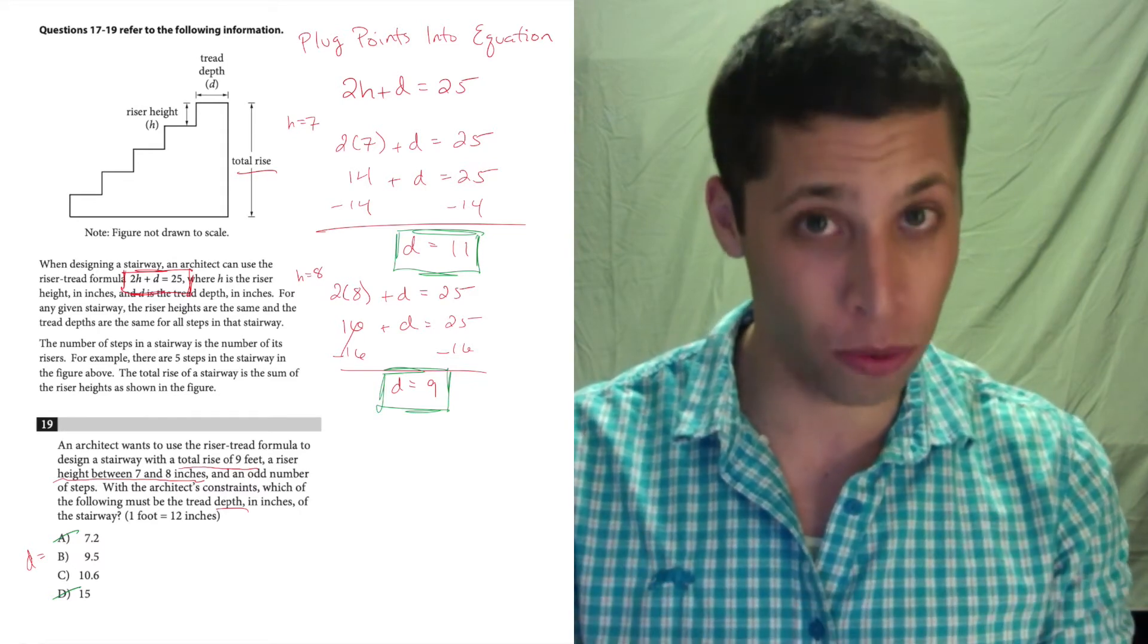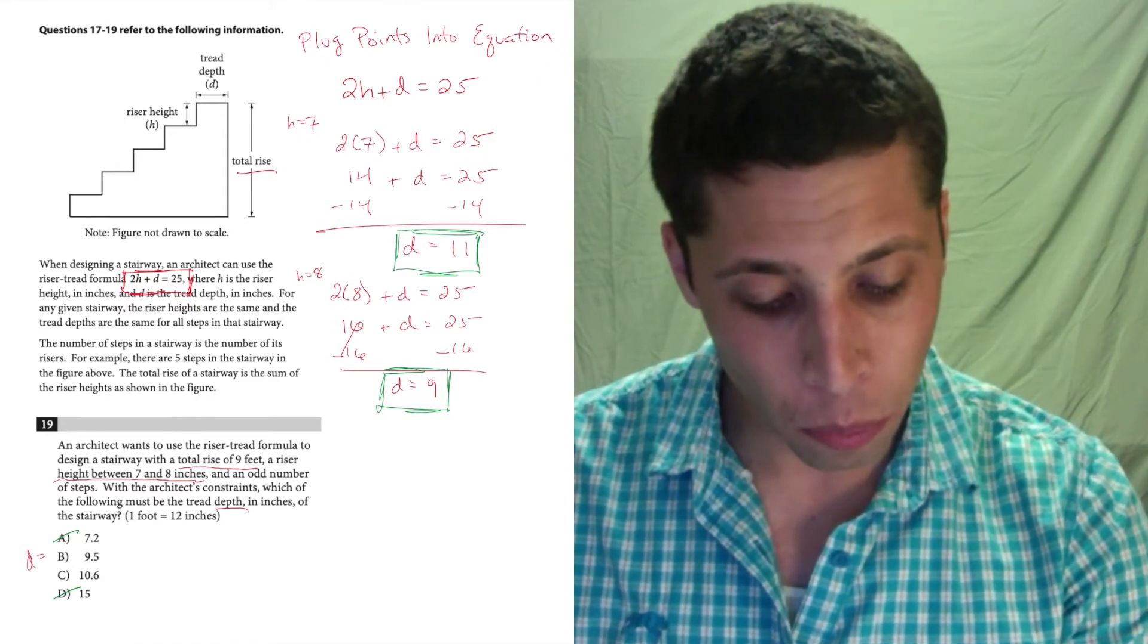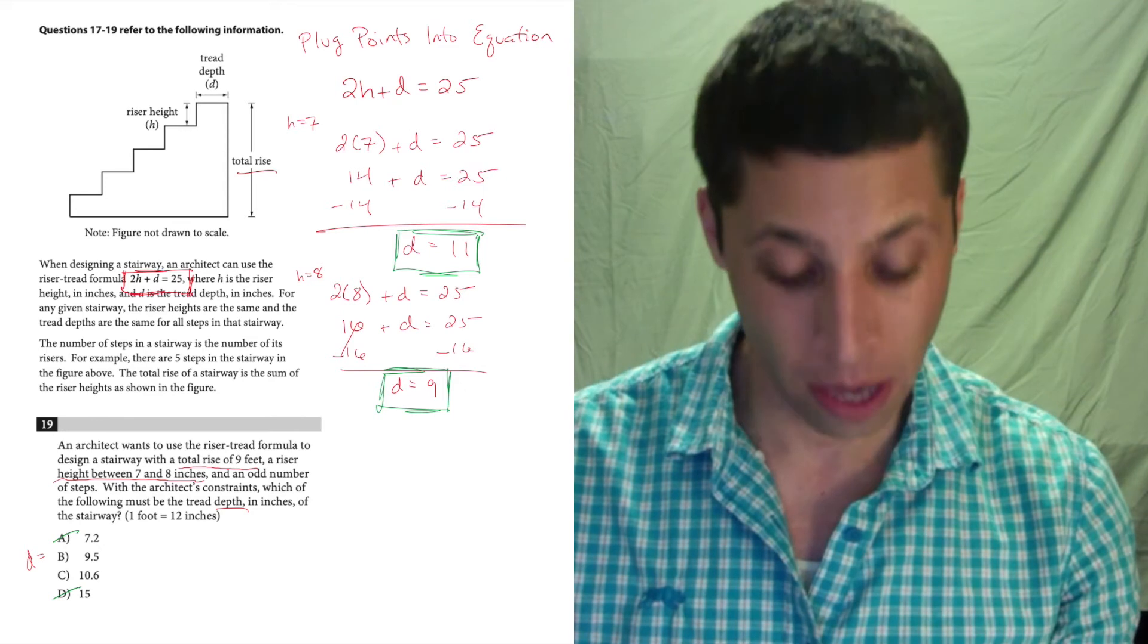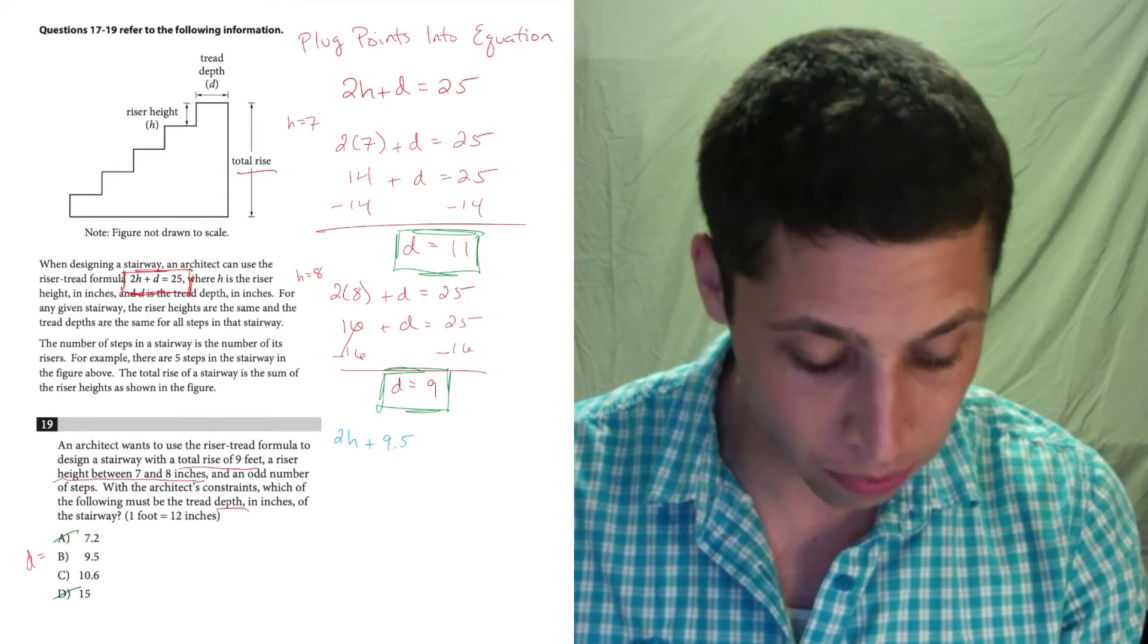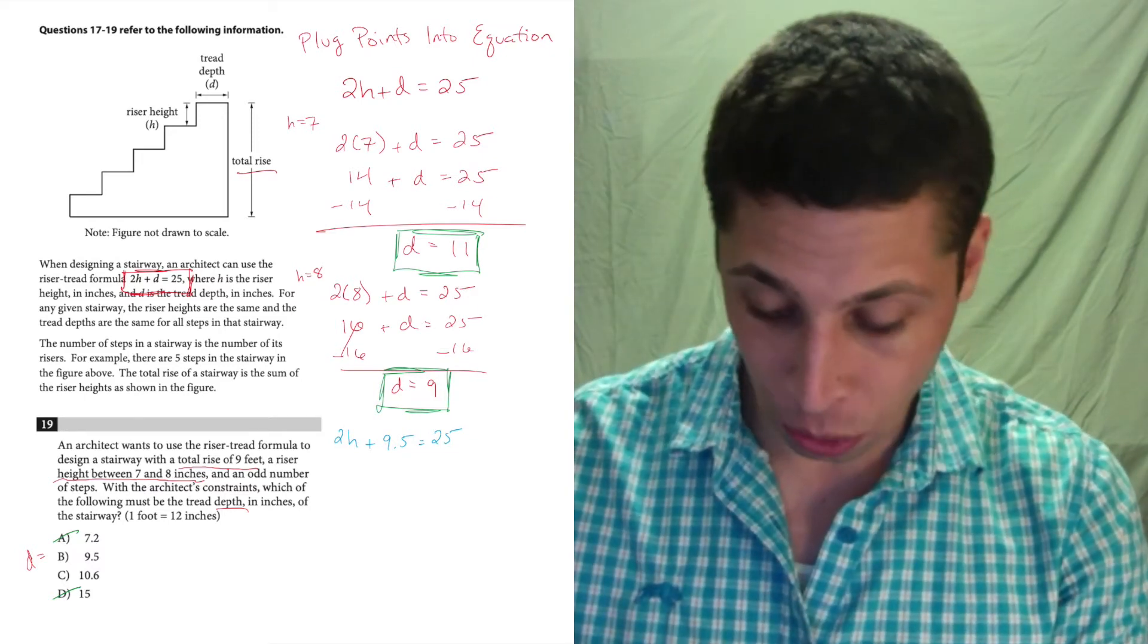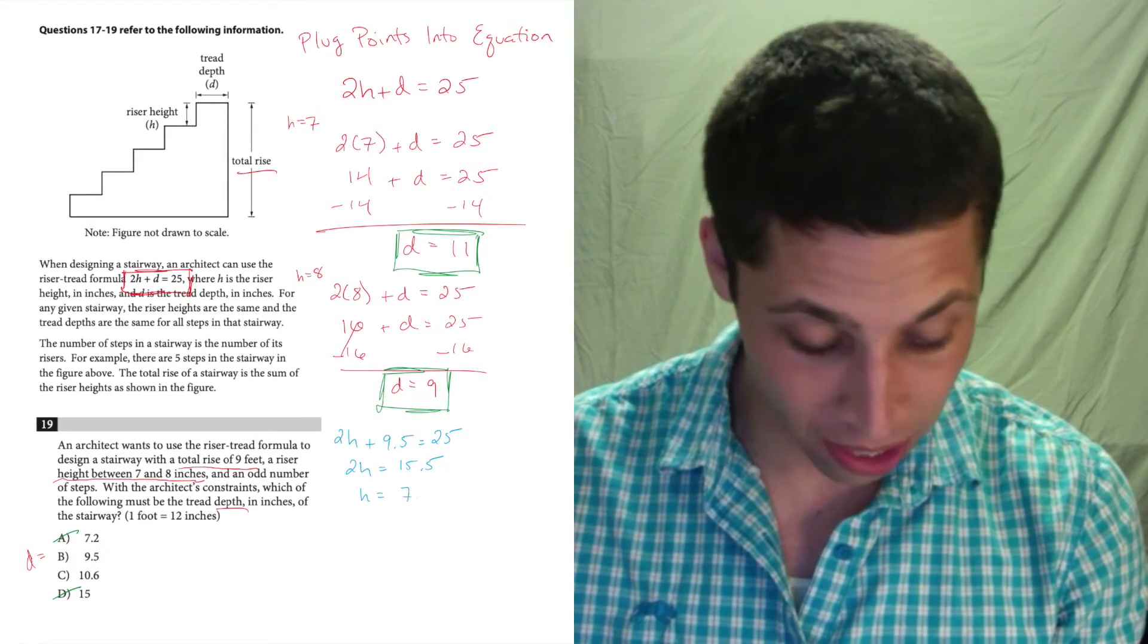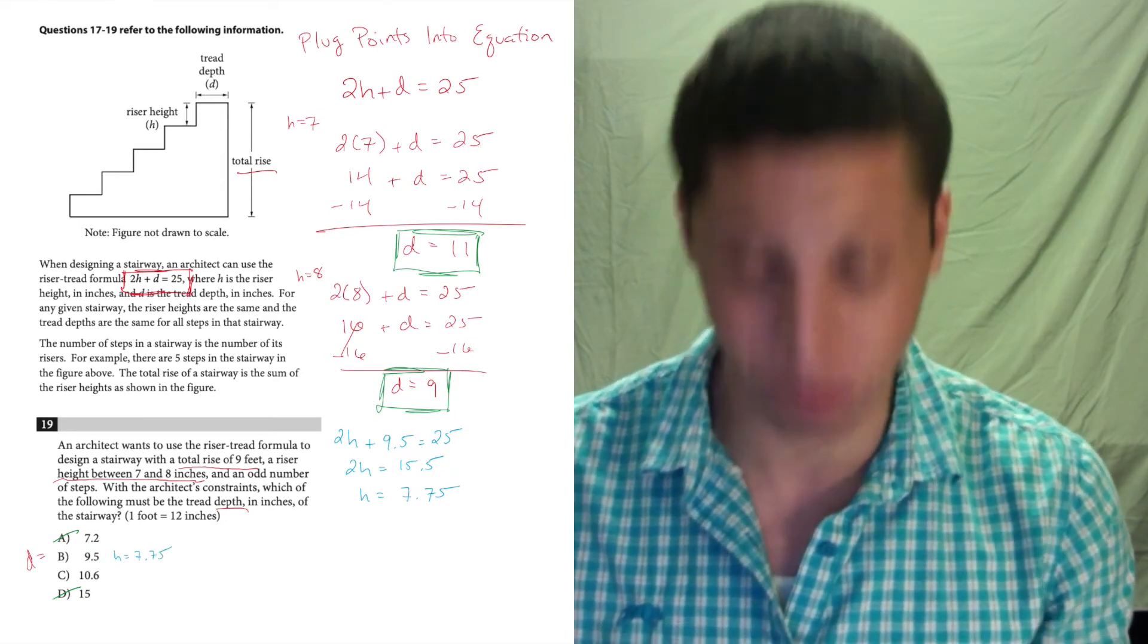But let's see what else we can do here. There are a couple of ways to do this, but I like dealing with plug points into equations because it's very robotic. And so what I would do here is I would say, okay, I put some values in for h. Now let's put some values in for d. Choice B and C, those are possible values of d. What if I were to put those in? Now these are messy numbers, but I can still use the same equation. 2h plus, in this case, 9.5 is equal to 25. So I would get my calculator, 25 minus 9.5, 2h is equal to 15.5, divide by 2, and I get h is equal to 7.75.